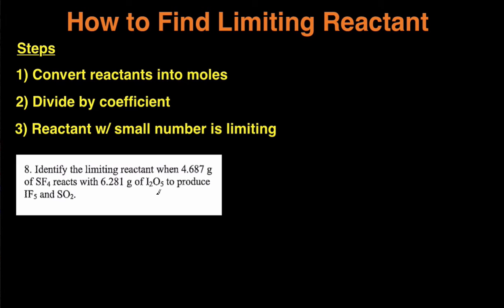And we'll work through this example together by following these steps. So this example says identify the limiting reactant when a certain amount of SF4 reacts with a certain amount of I2O5 to produce IF5 and SO2.